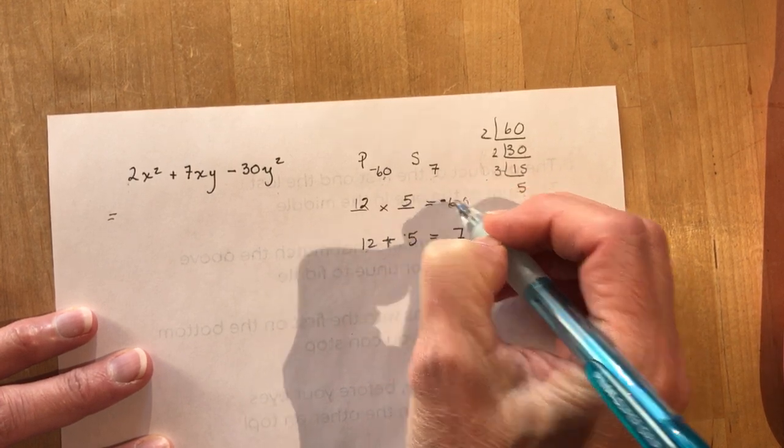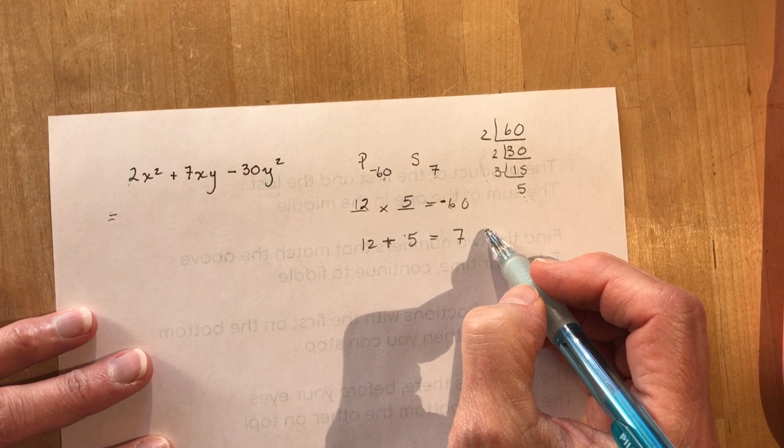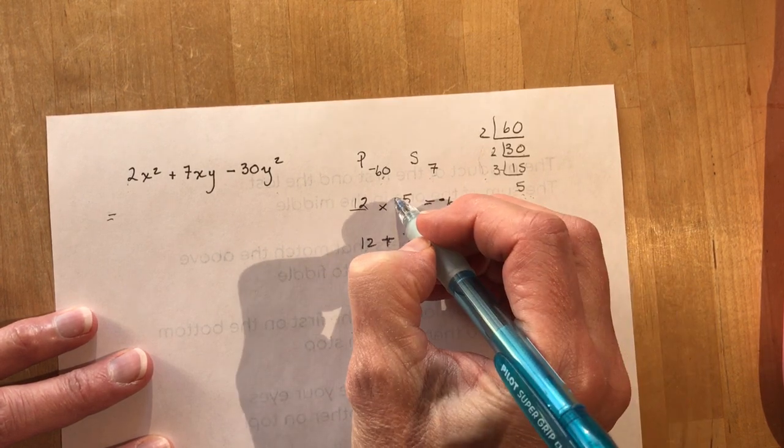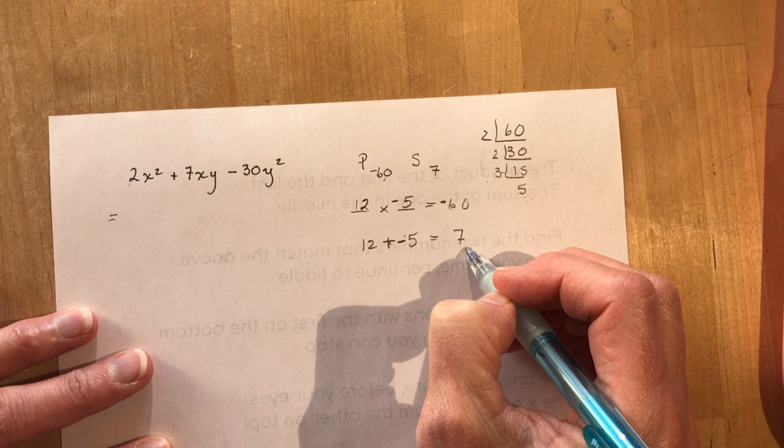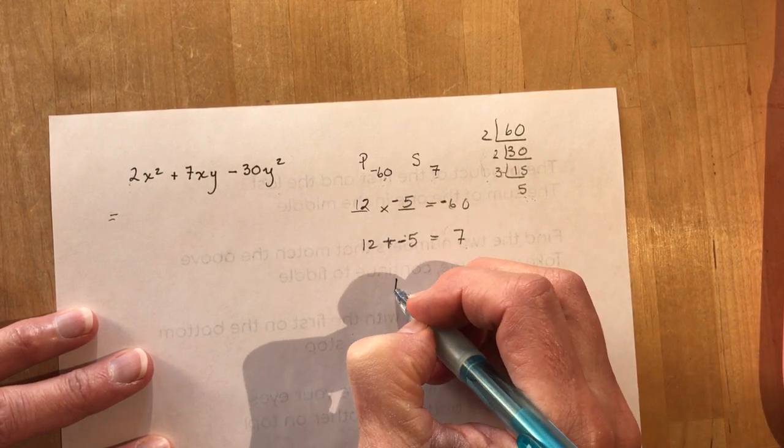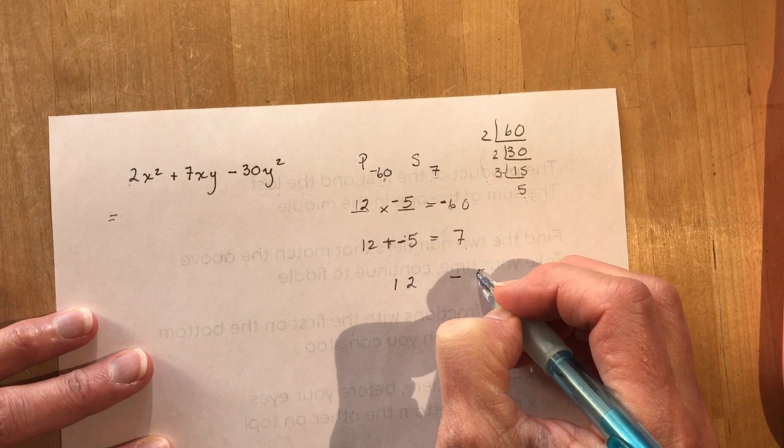Now again it was minus 60 so I need it to be 1 is negative, 1 is positive. Obviously the 5 is going to be negative or else we wouldn't have a positive sum. So now all I have to do is write those two numbers. 12 minus 5.